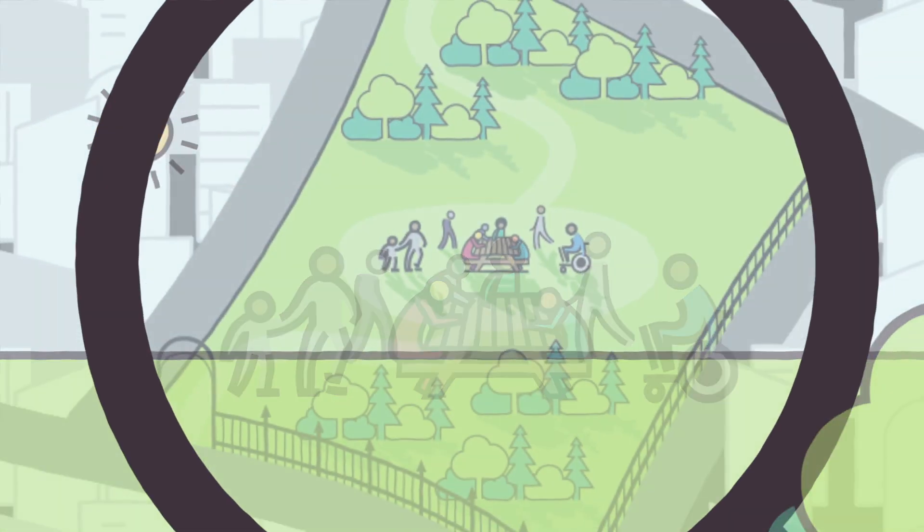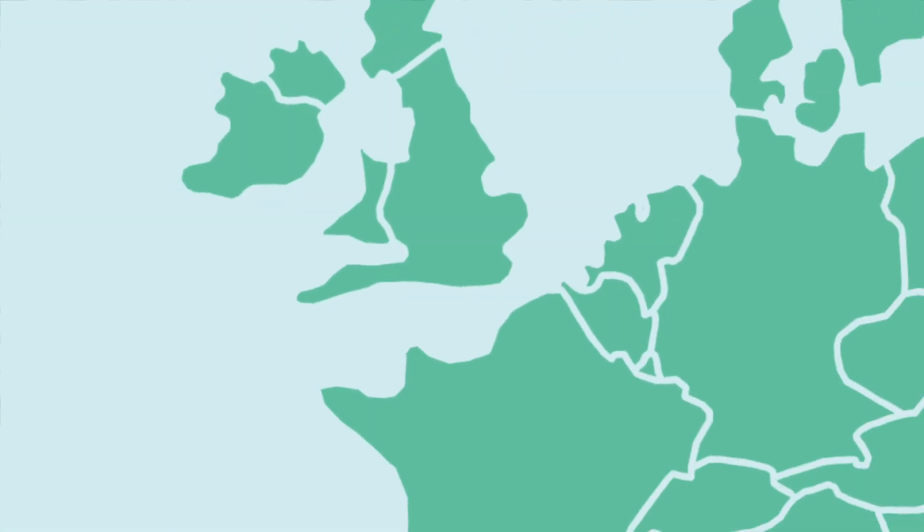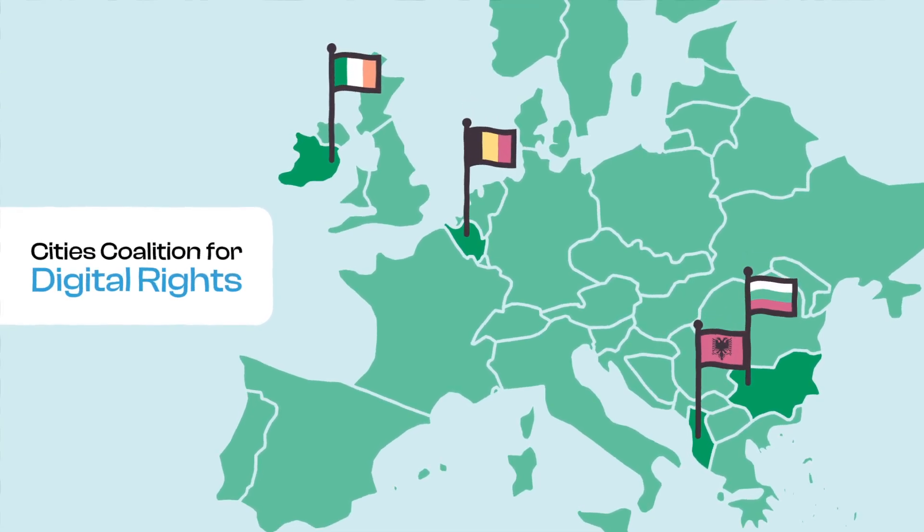Today, cities are taking an active role in advocating for digital rights by safeguarding citizens' data privacy. The City's Coalition for Digital Rights is piloting a framework across four European capitals – Dublin, Brussels, Sofia and Tirana – to support their transition in becoming a more privacy-focused and people-centric smart city.